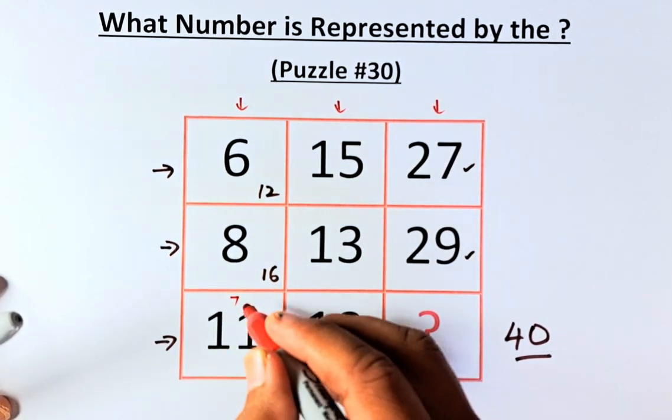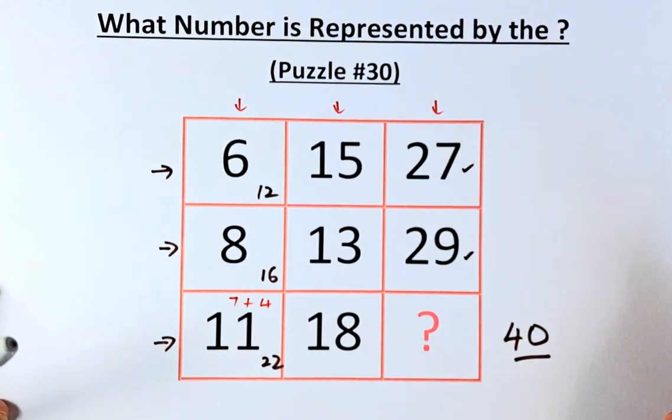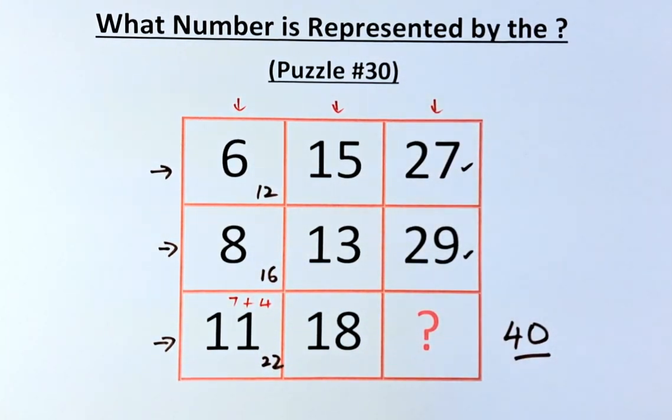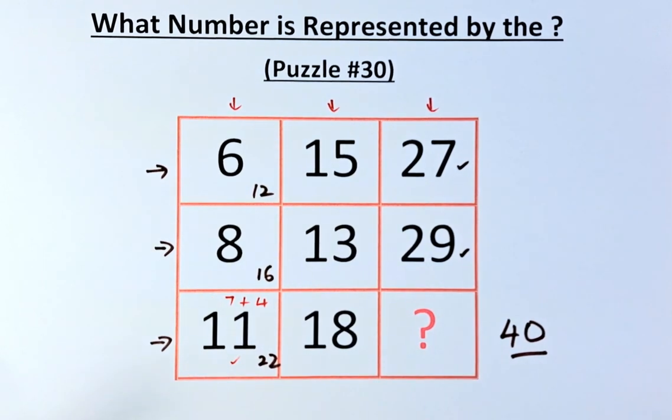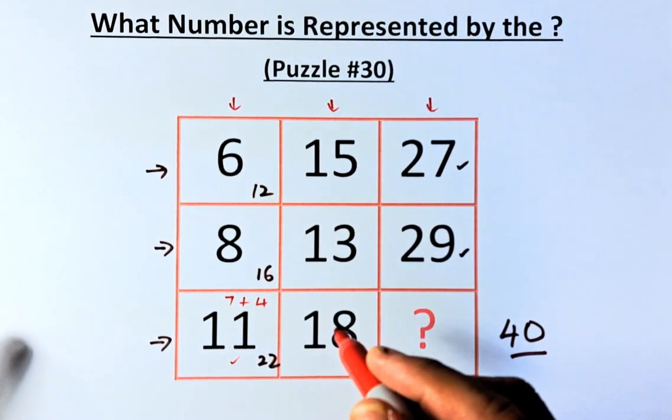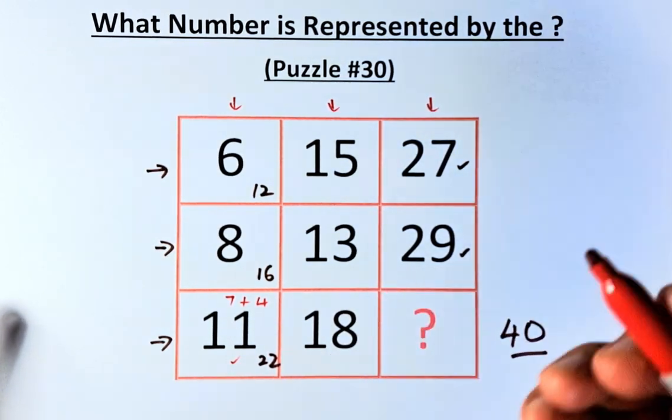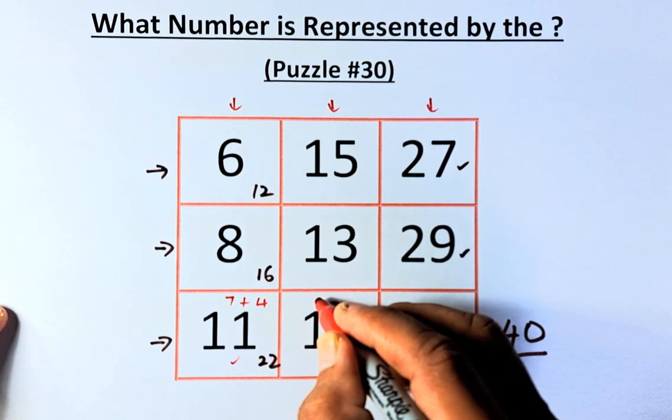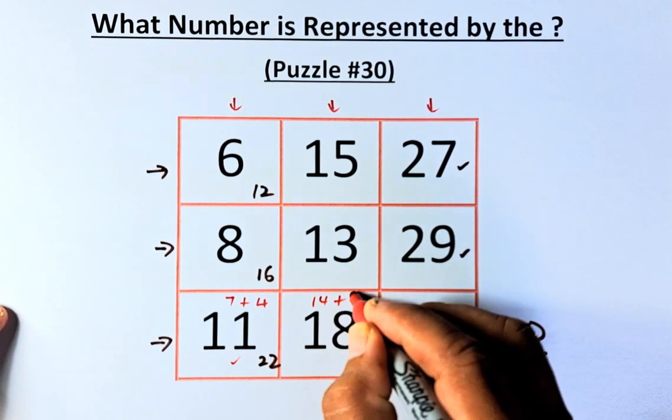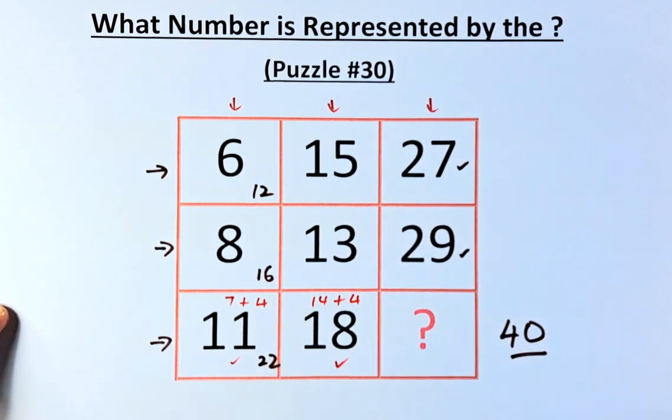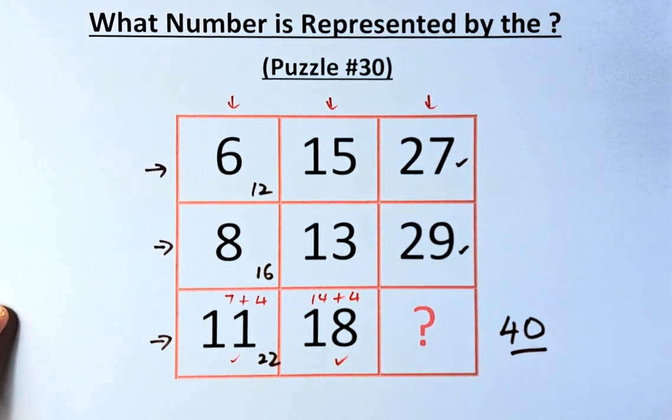And then what you're going to do is add 4 to the answer. So 7 plus 4 will give us 11. Next, we are going to do the same thing. 15 and 13, we're going to add them up. So 28 divided by 2, or the average, will give us 14. 14 plus 4 will give us 18. So for 27 and 29,